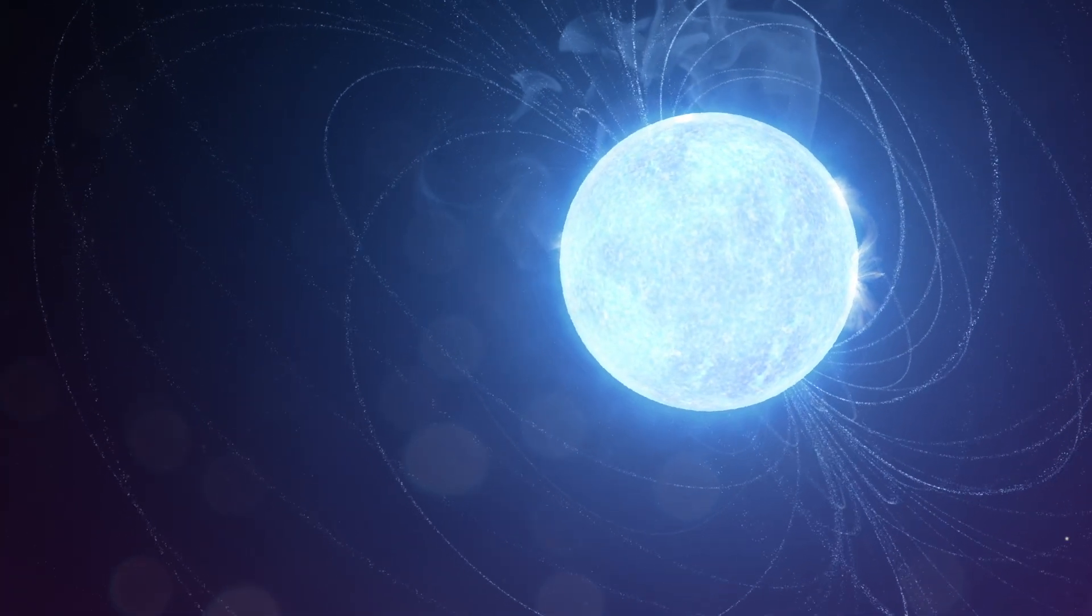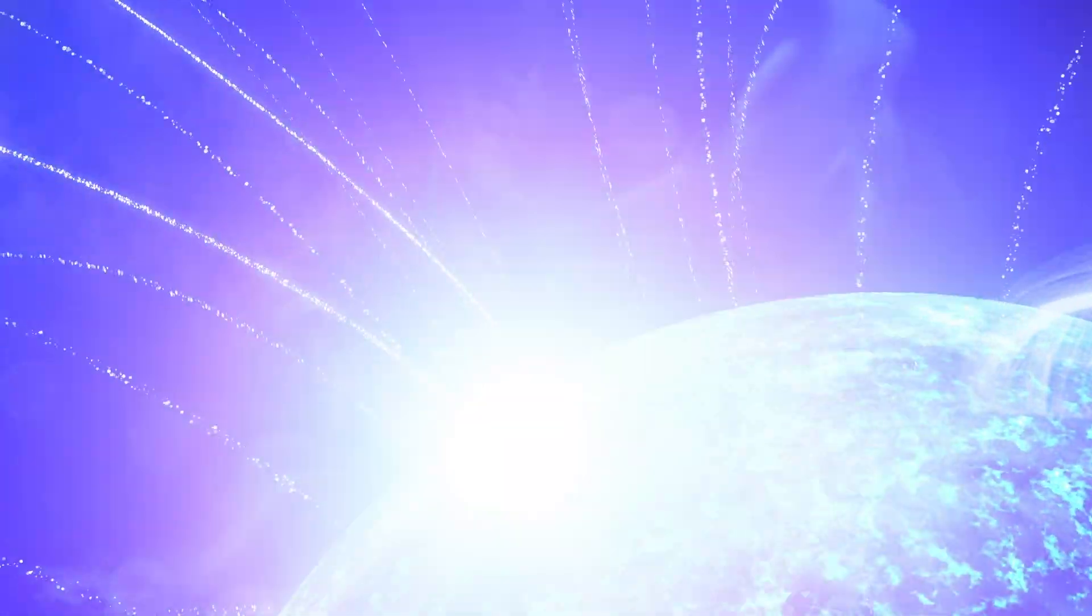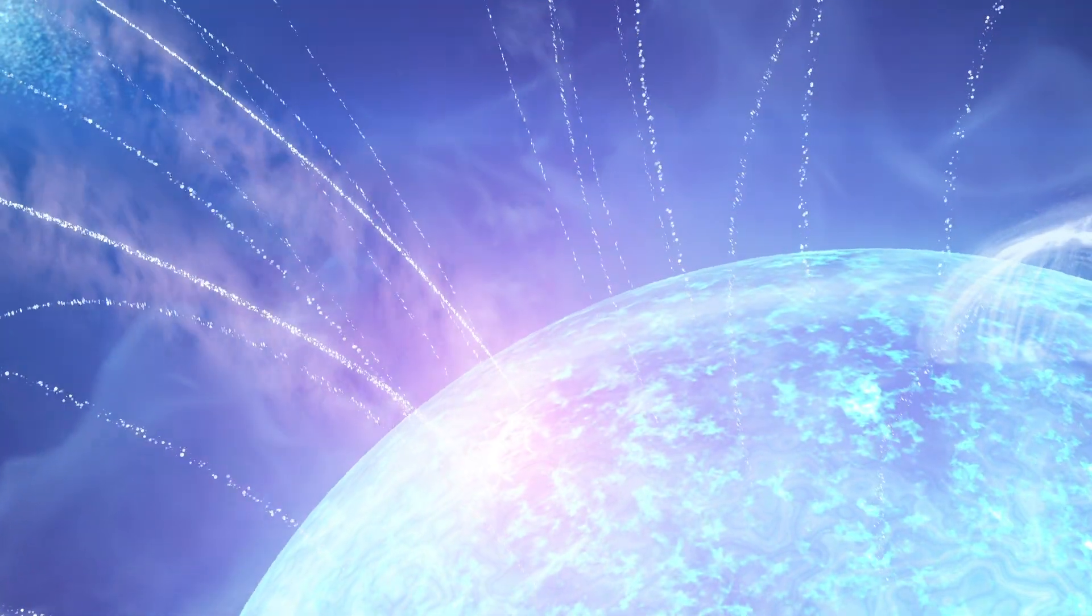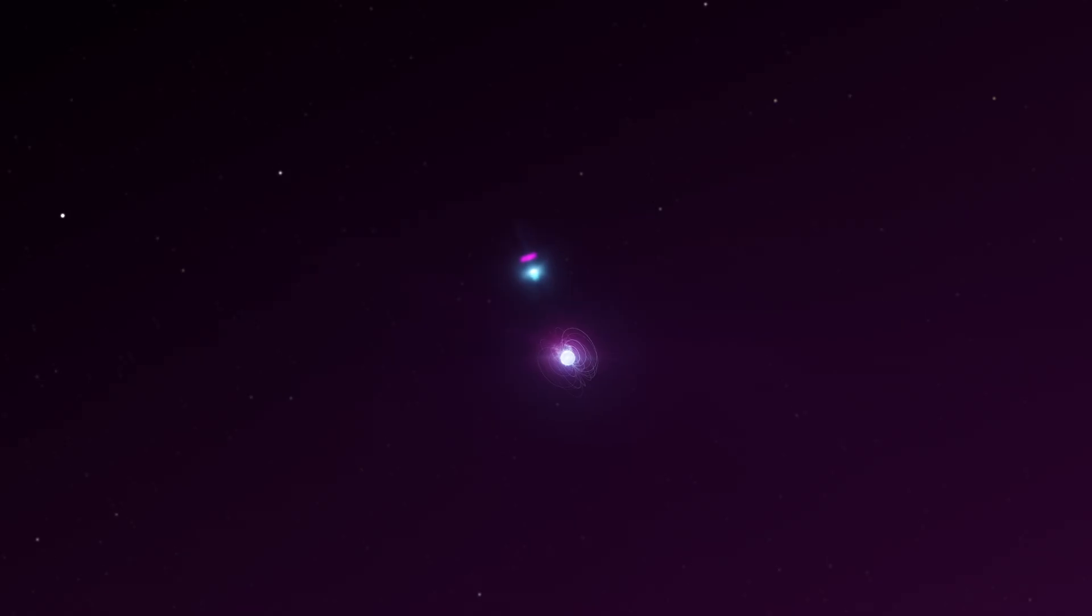Sudden changes to this ultra-strong field are thought to drive brief, enormously powerful outbursts called giant flares. One giant flare in our own galaxy affected Earth's upper atmosphere from 28,000 light-years away.